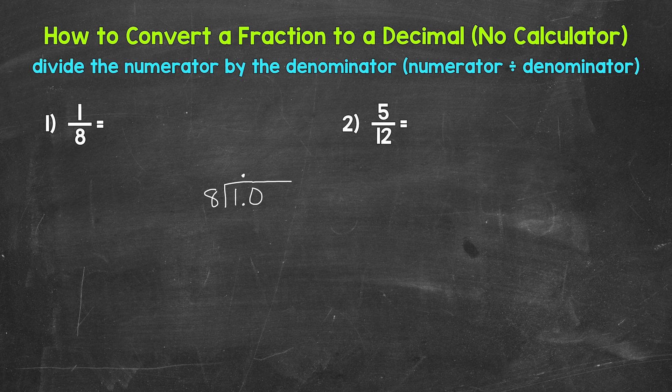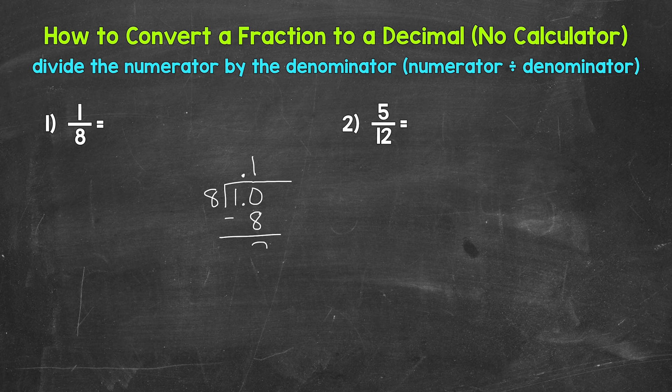Now we can think of this as 10 divided by eight. How many whole groups of eight in 10? One. So we need to put the one above the zero — make sure that one is above the zero, not the one. We used that zero in the tenths place and thought of this as 10, so the one needs to go above that zero to keep everything lined up correctly. Now we multiply one times eight: eight. Subtract — 10 minus eight is two.